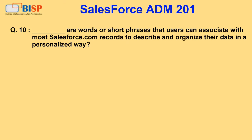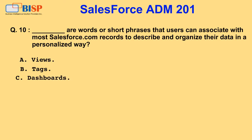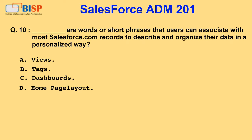Question 10. These are words or short phrases that users can associate with most Salesforce.com records to describe and organize their data in a personalized way. A. Views. B. Tags. C. Dashboards. D. Homepage Layout. E. Apps.